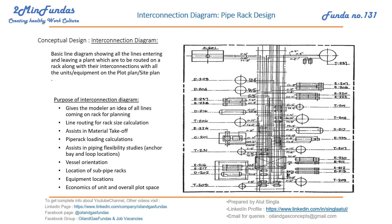Before starting our layout for a pipe rack, the first thing we need is an interconnecting diagram. This is a basic line diagram showing all the lines entering and leaving a plant that are to be routed on the pipe rack, along with the interconnections with all units and equipment on the plot plan. We need a plan showing what basic equipment is there, how many lines are going in and coming out of the pipe rack.